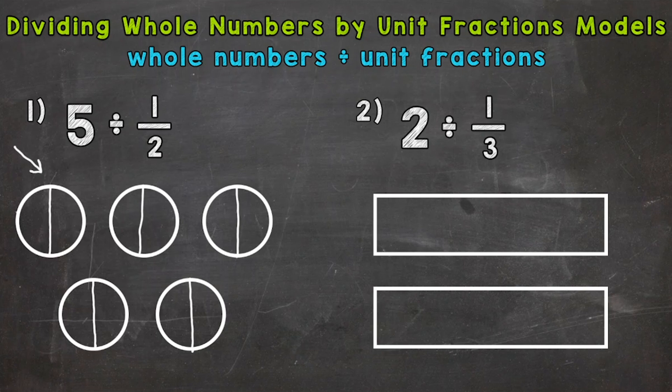So once we divide each of those five wholes in half, we need to count how many pieces we have now. So we have one, two, three, four, five, six, seven, eight, nine, and ten. So that's our answer. Five divided by a half equals ten. We started with five wholes, divided each of those in half and ended up with ten pieces.